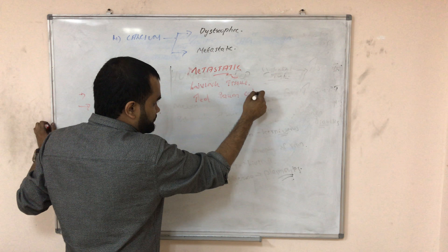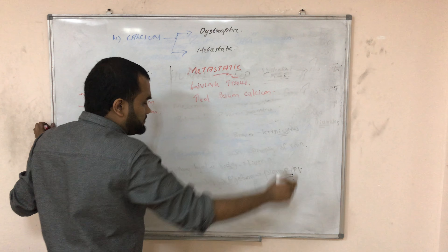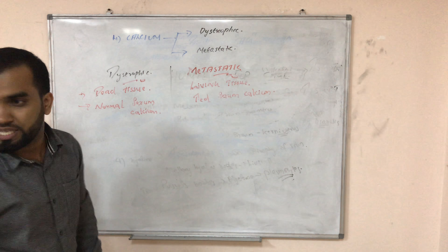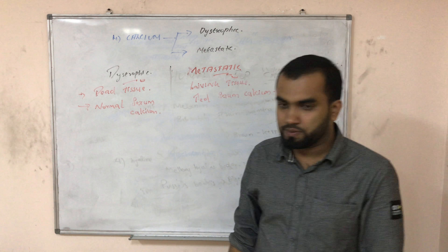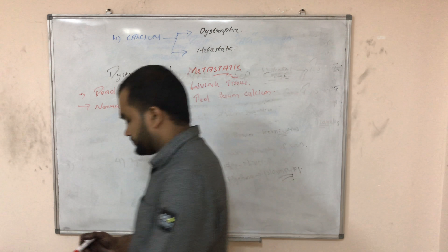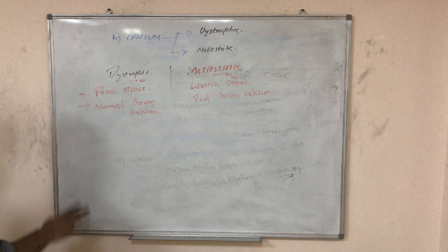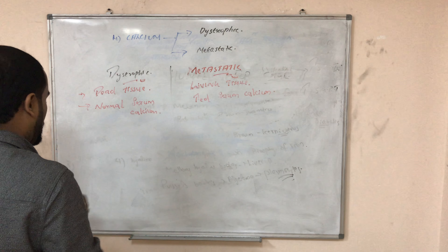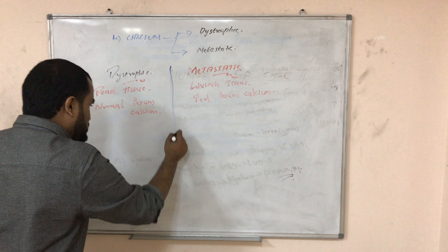In metastatic calcification, serum calcium is increased. This is an important MCQ point: dystrophic = normal serum calcium; metastatic = increased serum calcium.